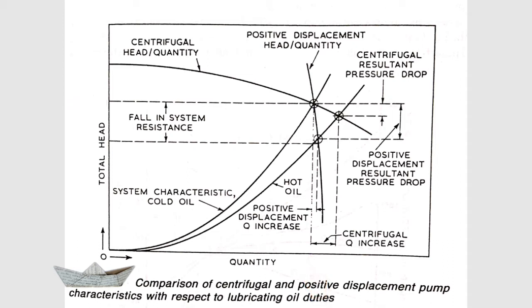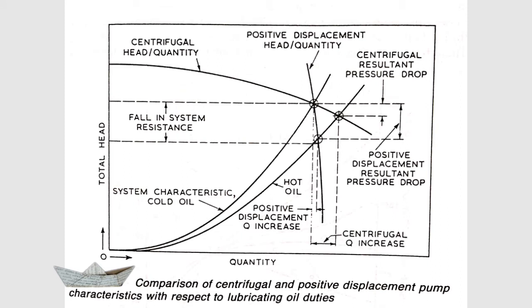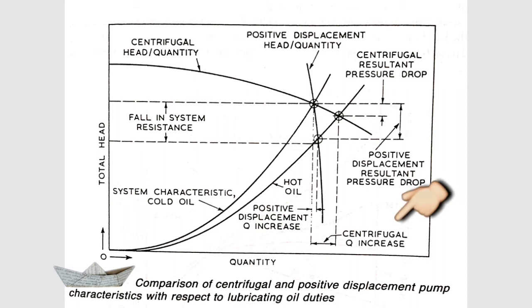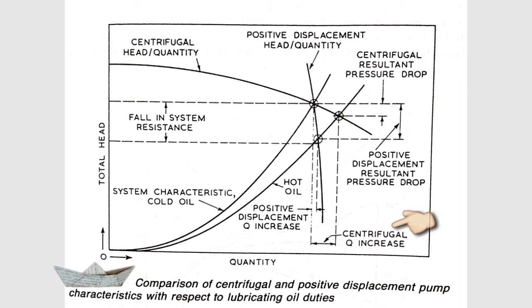Now consider the situation where the ship is out of port and the main engine is completely warmed up. The lube oil circulates through parts such as main engine bearings and pistons, absorbing heat, so the lube oil becomes hotter in nature. We now look at the system characteristic curve for hot oil, comparing flow rate and pressure head for both pump types. You can see a significant increment in flow rate for the centrifugal pump as the lube oil transitions from cold to hot.